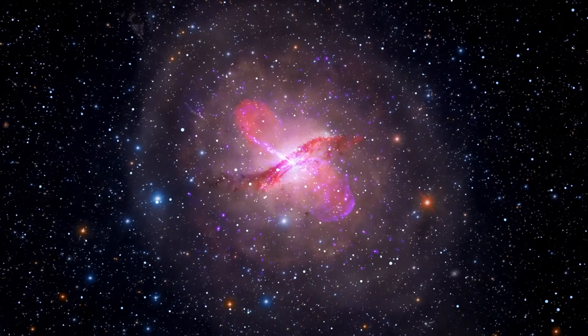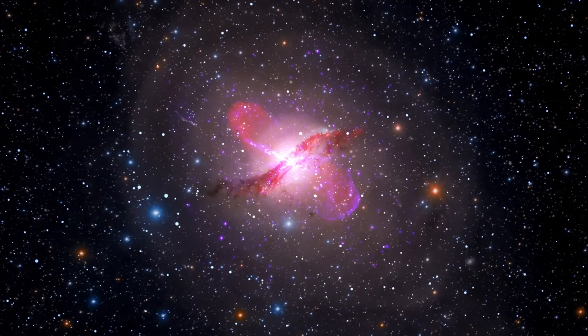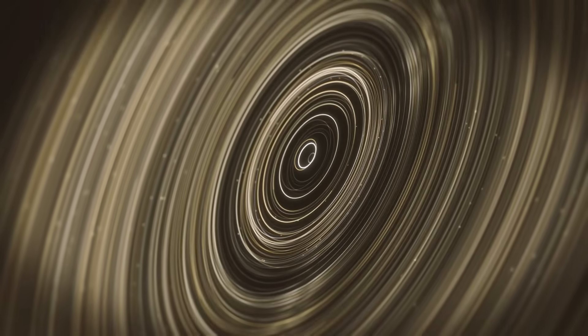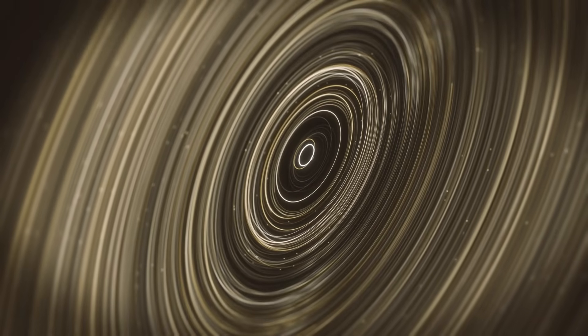The ball of gas continues to compress, becoming hotter and rotating faster. But not all of the material falls directly onto the growing protostar. Some of it gathers in a flat disk around it.